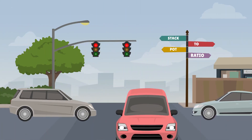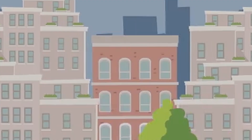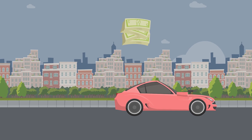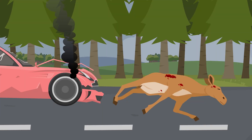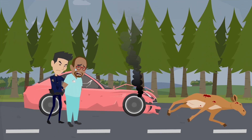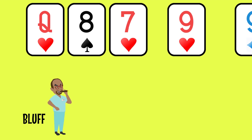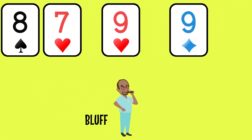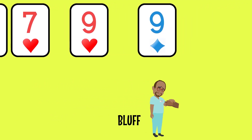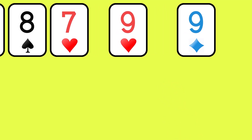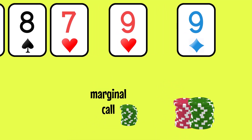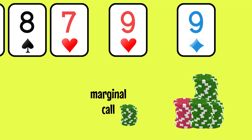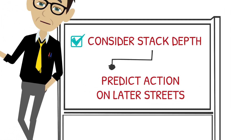You want to avoid awkward SPR spots if you can — situations where a bet or call on one street sets you up for difficult decisions on the next, or conversely makes your opponent's decisions easier. For example, when you're bluffing and don't leave enough to bet on the river, or when you're making a marginal call on the turn when an all-in shove on the river is likely based on the remaining stacks.